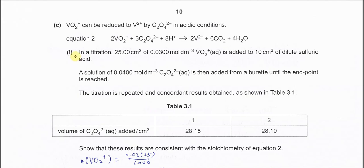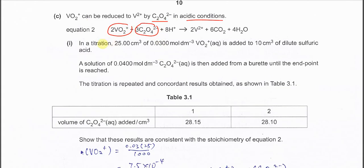Part C. VO²⁺ can be reduced to V²⁺ by C₂O₄²⁻ in acidic condition. Equation is given, so it's 2 to 3 ratio. Now in the titration, 25 cm³ of 0.03 mol per dm³ VO²⁺ is added to 10 cm³ of dilute sulfuric acid. A solution of 0.04 mol per dm³ C₂O₄²⁻ then added from burette until endpoint reached.